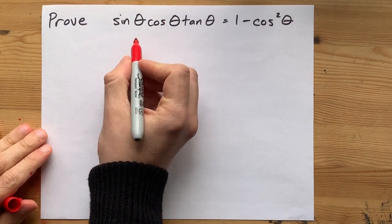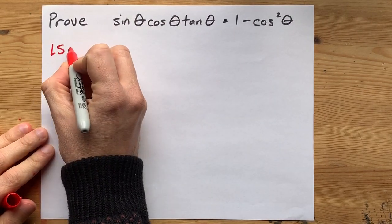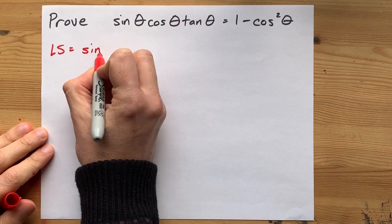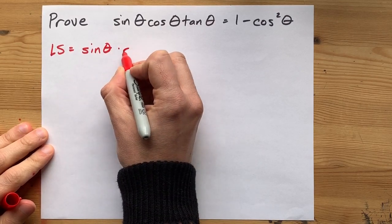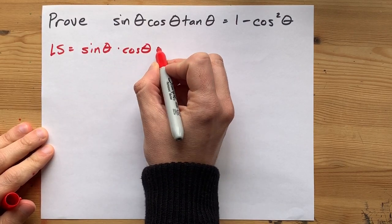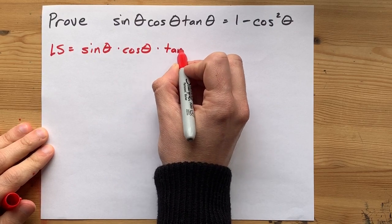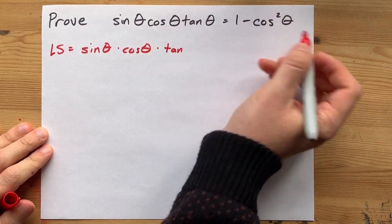This identity asks us to prove that the sine of an angle times the cosine of that angle times the tangent of that same angle equals 1 minus cos squared of that angle.